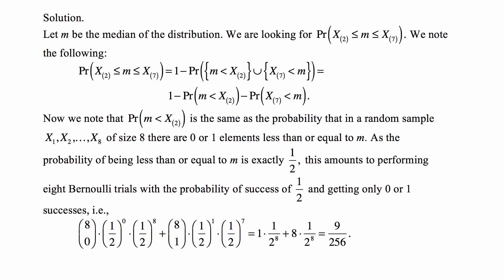The probability that x_2 in parentheses, the second order statistic, is more than m is the same as the probability that in a random sample of size 8, there are 0 or 1 elements less than or equal to m. Because if the second one already is more than m, how many can be less than m? Well, 0 or 1. And after that, everybody is more than m. That's equivalent to x_2 being more than m.